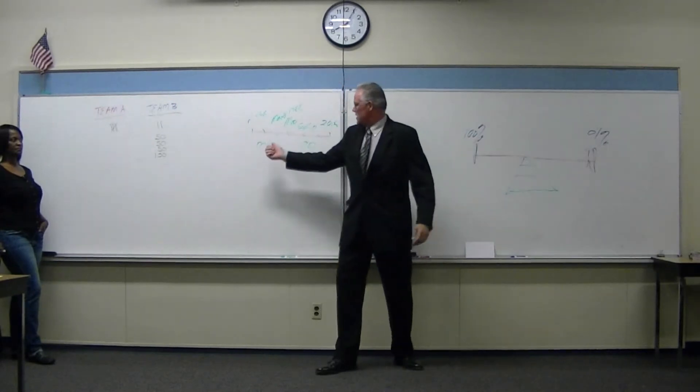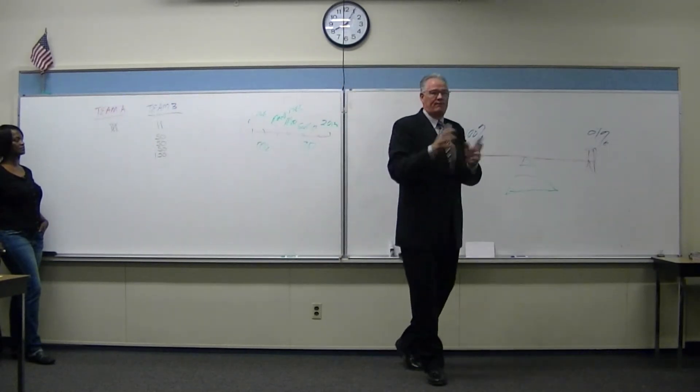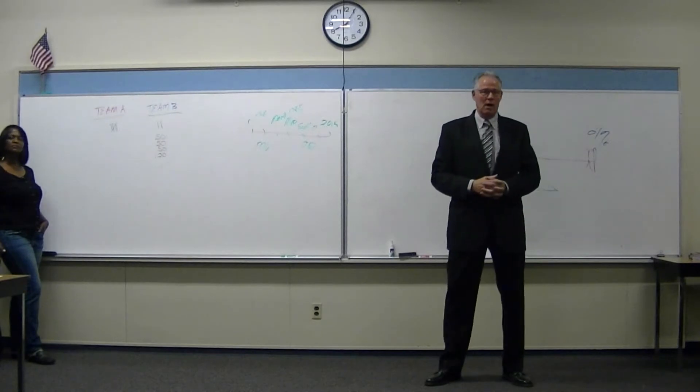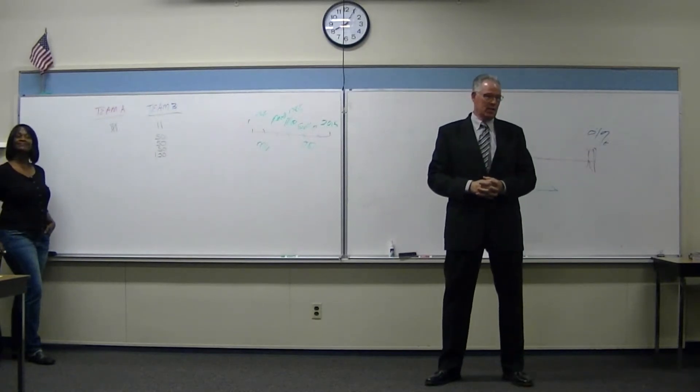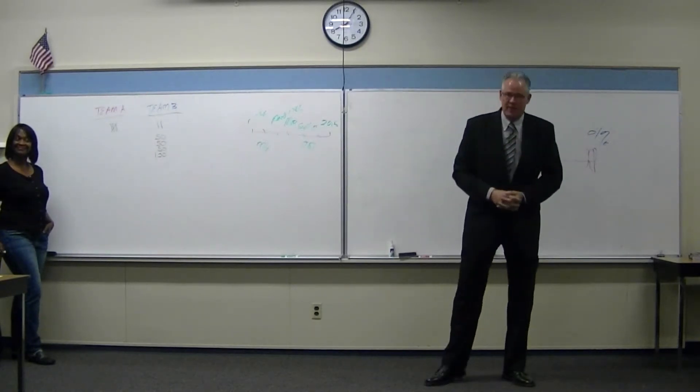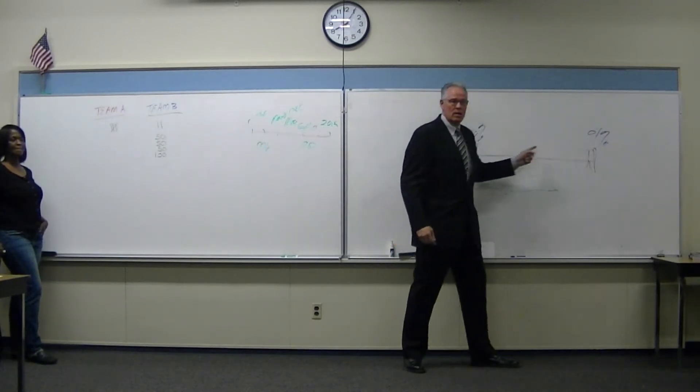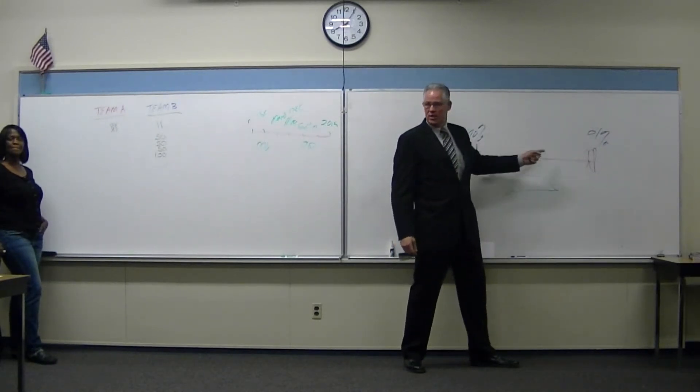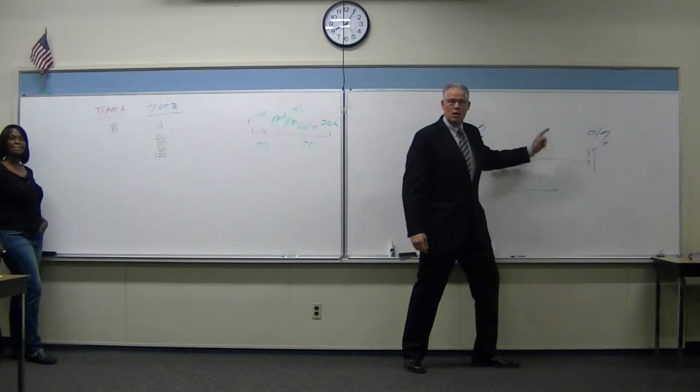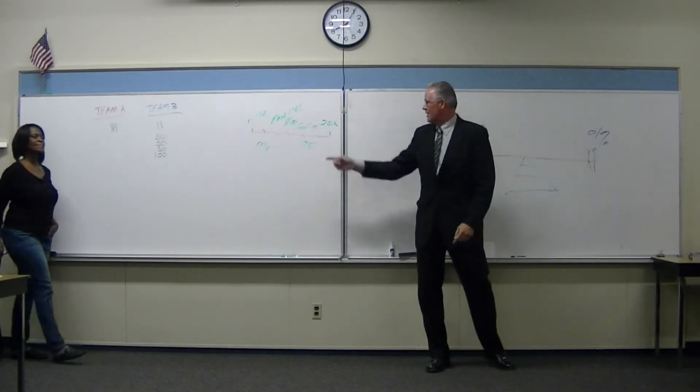When we went to war in 1776, what were the articles that we were fighting under? Articles of Confederation. Where were they on the scale between 100% and no government at all? You're right, give them about 50 points.